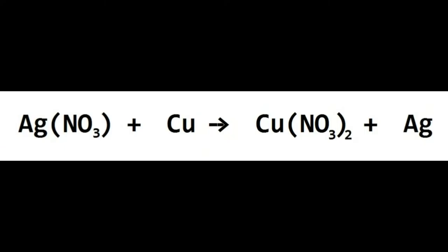When dealing with polyatomic ions while balancing, keep the polys all together. Here's a trick: if you see the same polyatomic ion on both sides — like NO₃ on the left and NO₃ on the right — you can group them together, which makes less work. That's actually how I ended up learning polyatomic ions — by knowing that little rule.